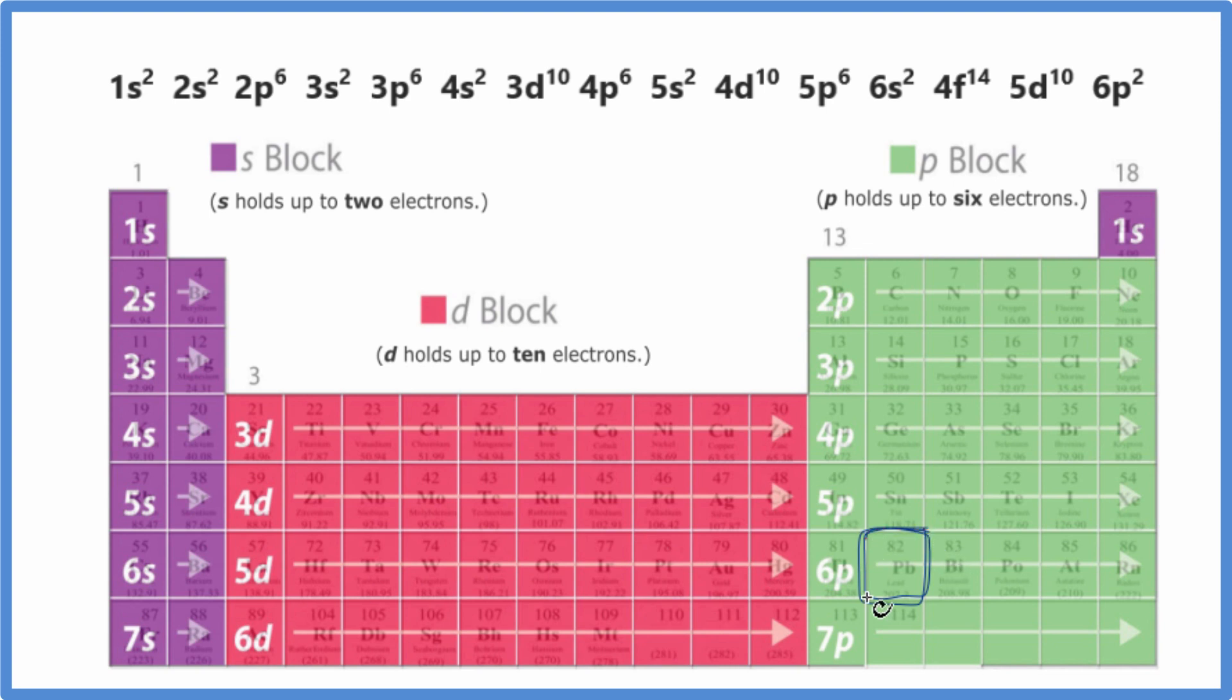For lead, right here, we end up with 6P1, 6P2. If we look at our configuration, it ends in 6P2. So that's a really good way for us to check ourselves and think about the periodic table.